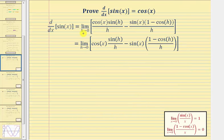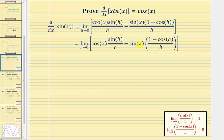We have two special limits hidden within these two fractions. To better recognize them, let's write the factor of cosine x in front of the first fraction and the factor of sine x in front of the second fraction. Because we have a limit of a difference, we can write this as a difference of two limits. And because cosine x and sine x are not affected by h, we can factor cosine x and sine x out of the two limits.